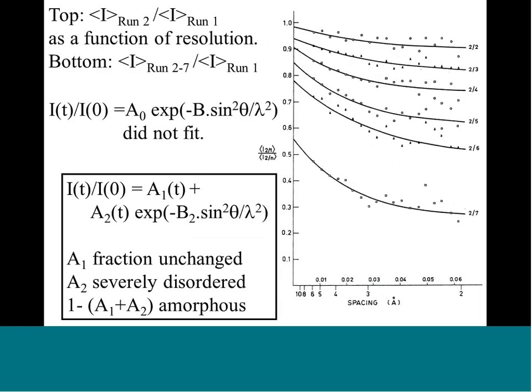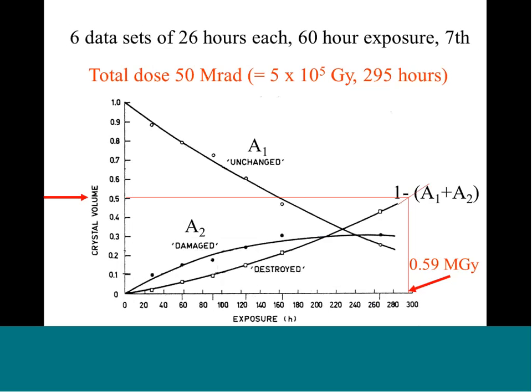They fitted their seven datasets to these A2 and A1 terms and plotted those as a function of exposure time — 300 hours on a sealed tube anode. It's measured in rad, because that used to be the unit of dose, but now the unit is gray. They came to the conclusion that half of the crystal volume would be gone by the time you got to 0.6 megagray. There was no other quantitative measurement of this for many years after this experiment.